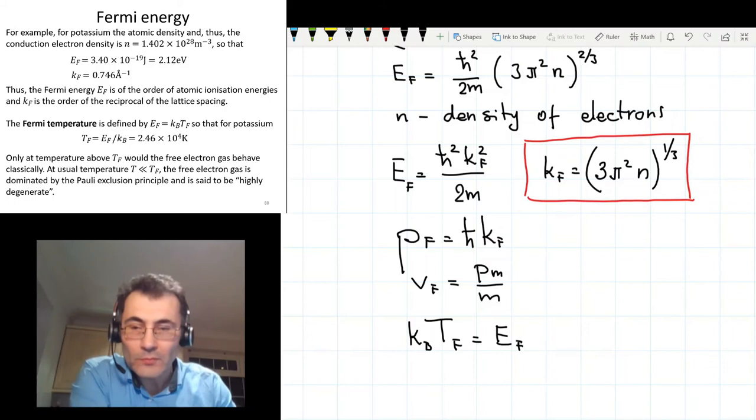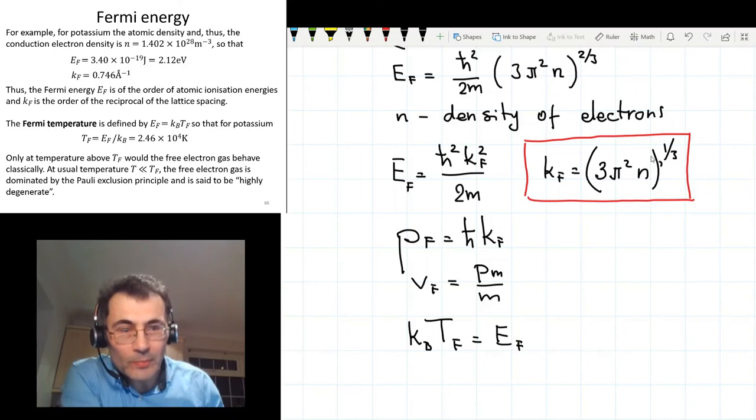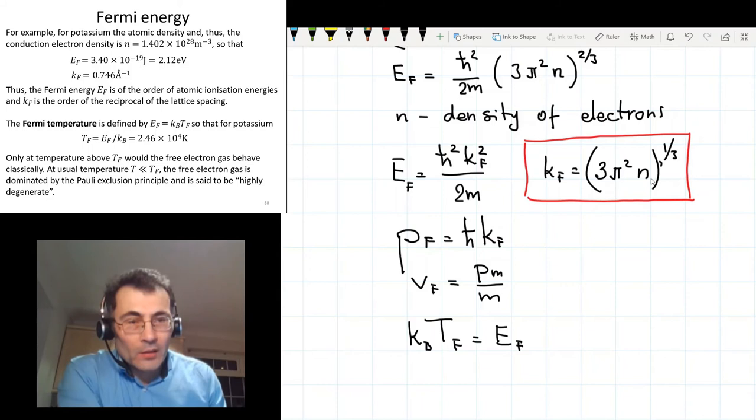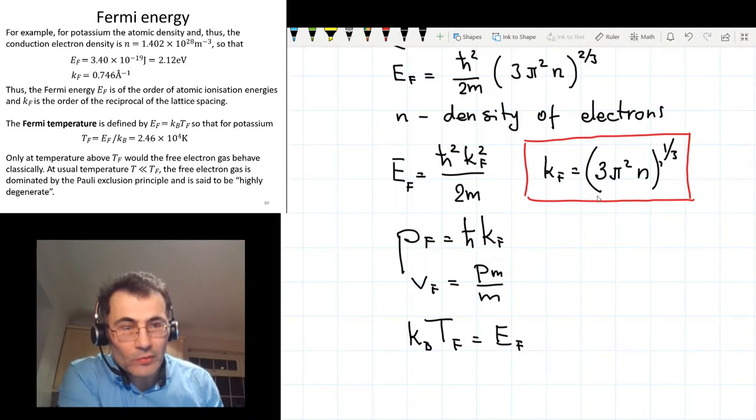So please note that the Fermi wave vector depends only on a single parameter, which is the density of electrons. So then by just substituting the value of n into the expression for the Fermi wave vector, we can see that the Fermi wave vector is roughly 1 inverse Angstrom. So Angstrom is 10⁻¹⁰ meter, and this roughly corresponds to the inverse interatomic distance.